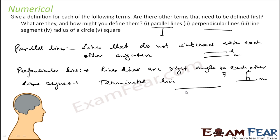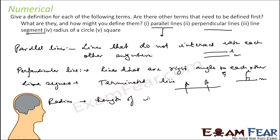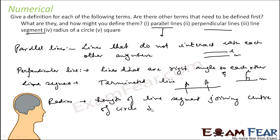A line actually has infinite length. So if I terminate it at two points and fix the length, then AB is the line segment. The radius of a circle is the length of the line segment that joins the center of a circle.